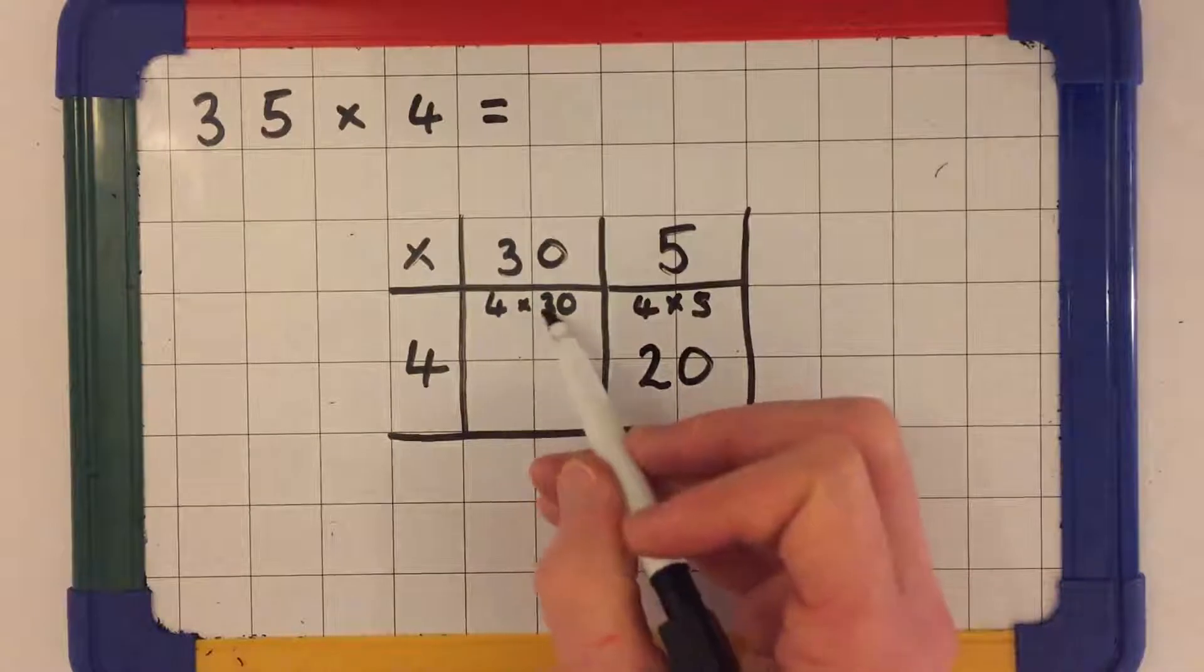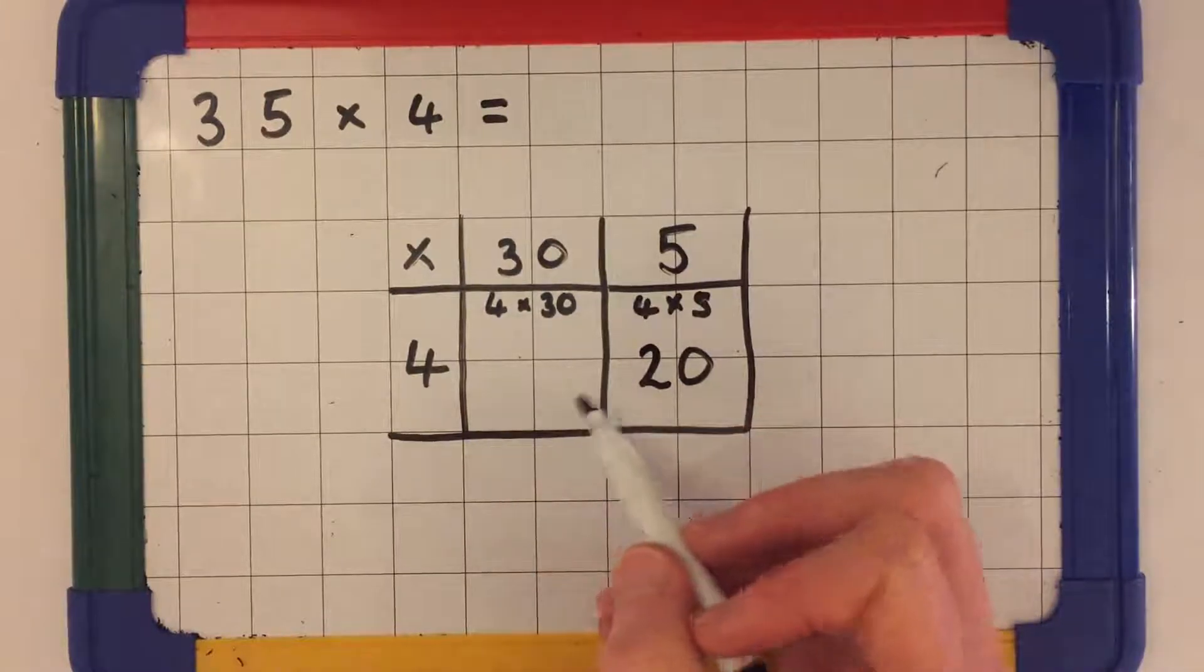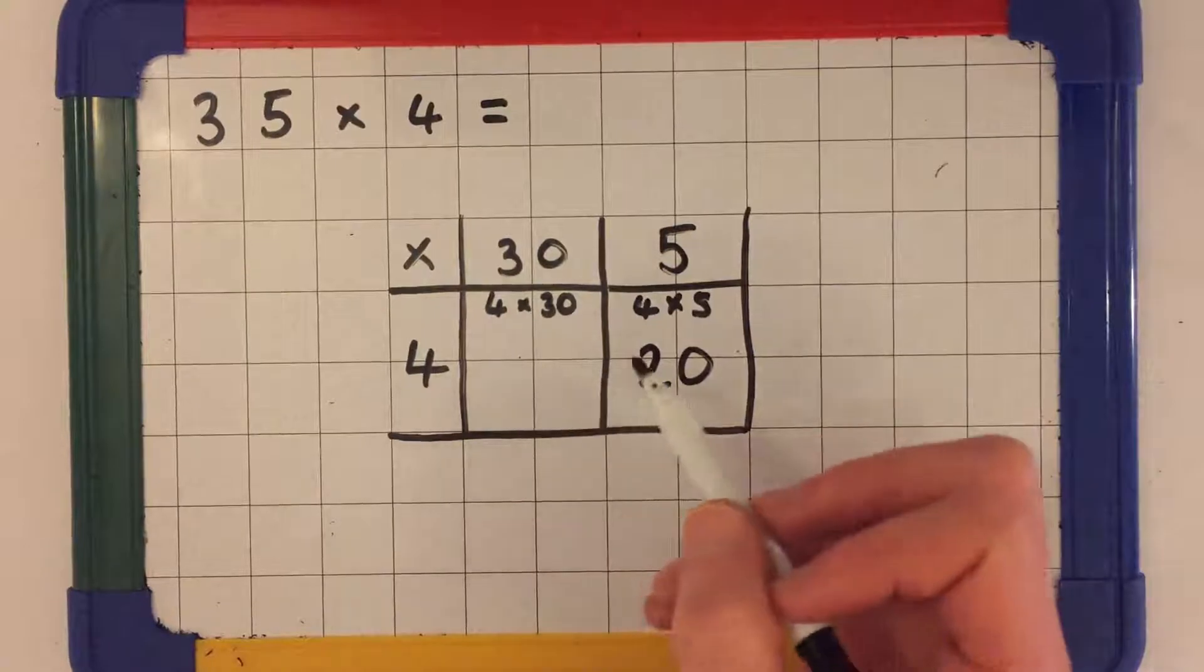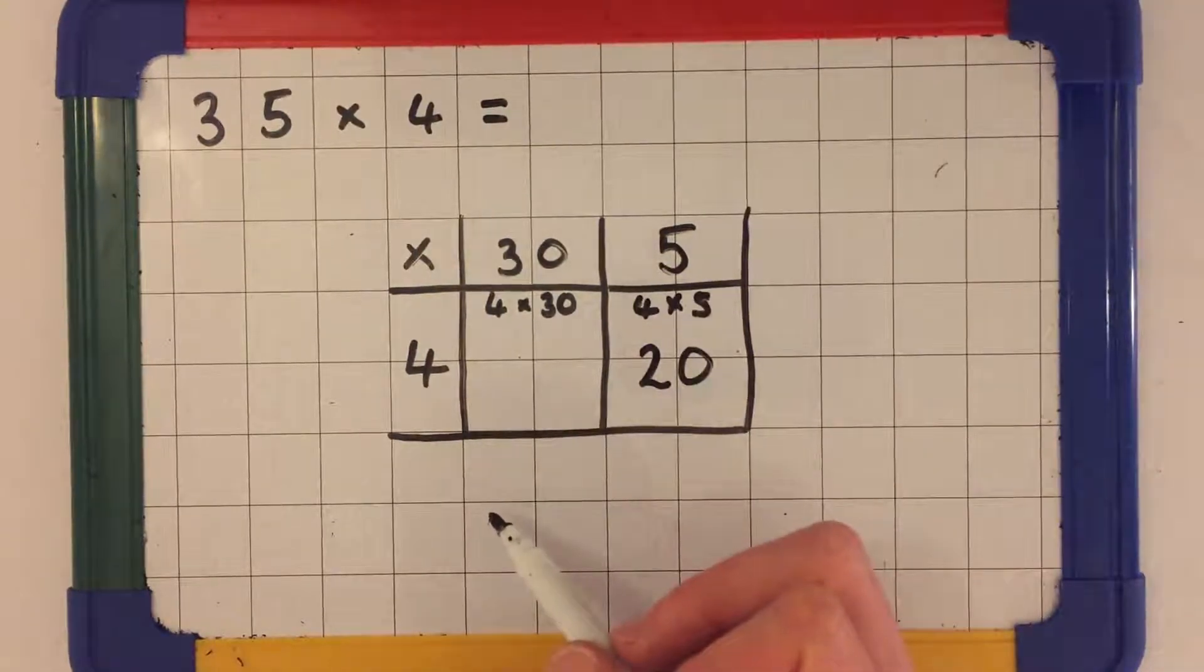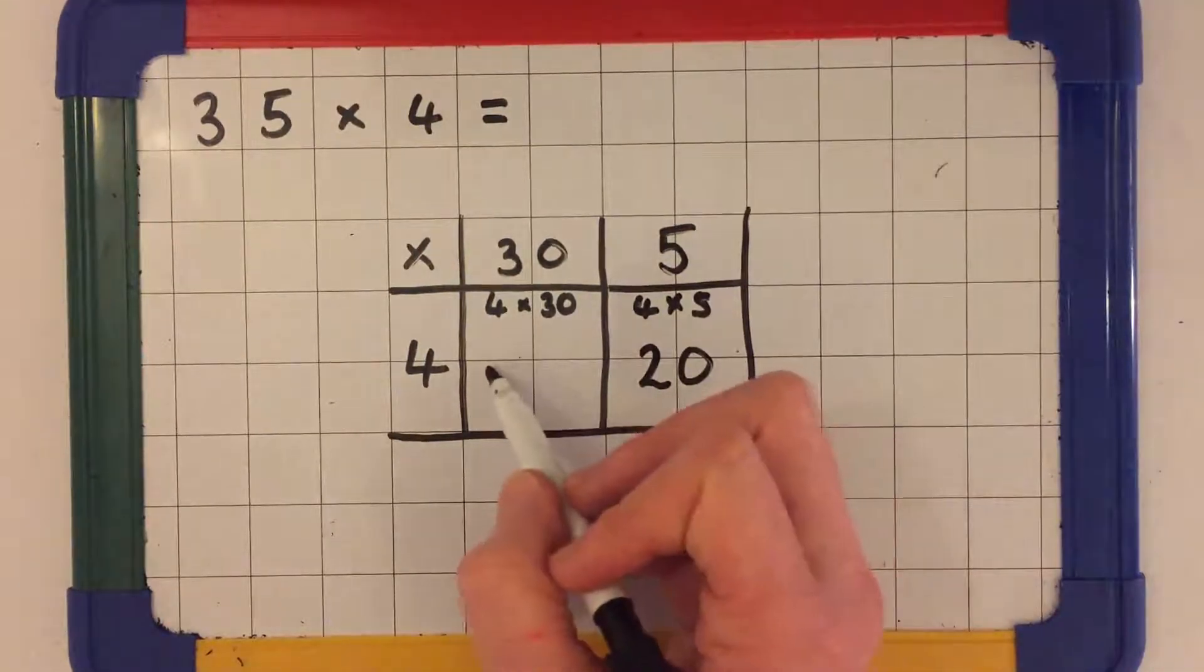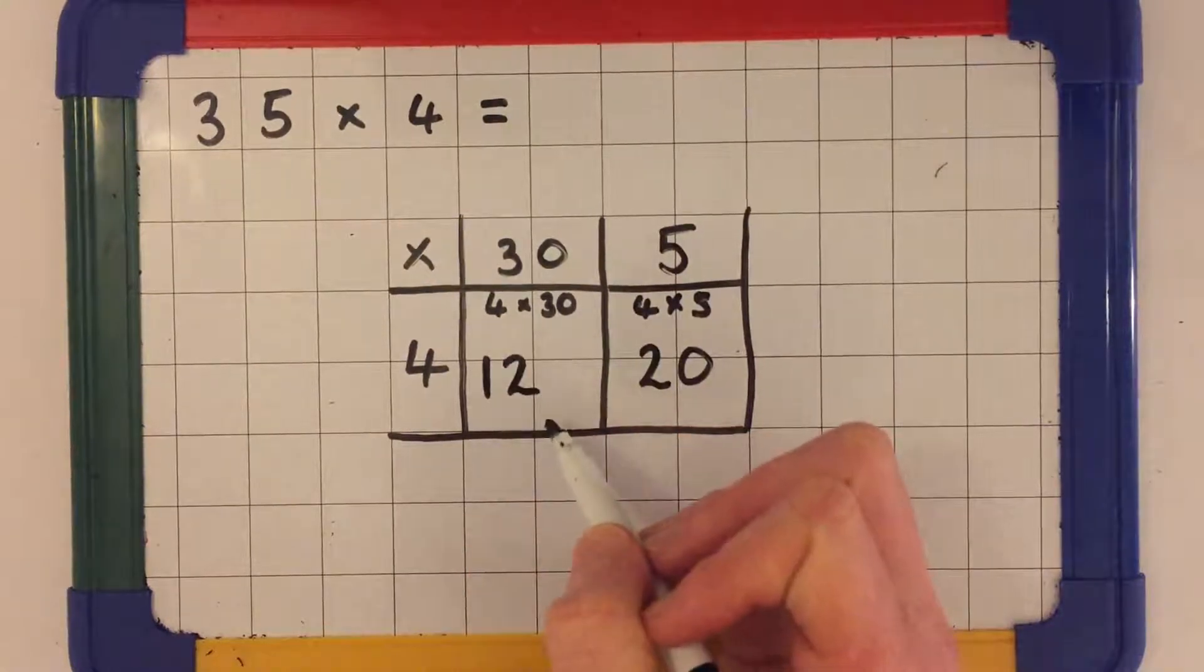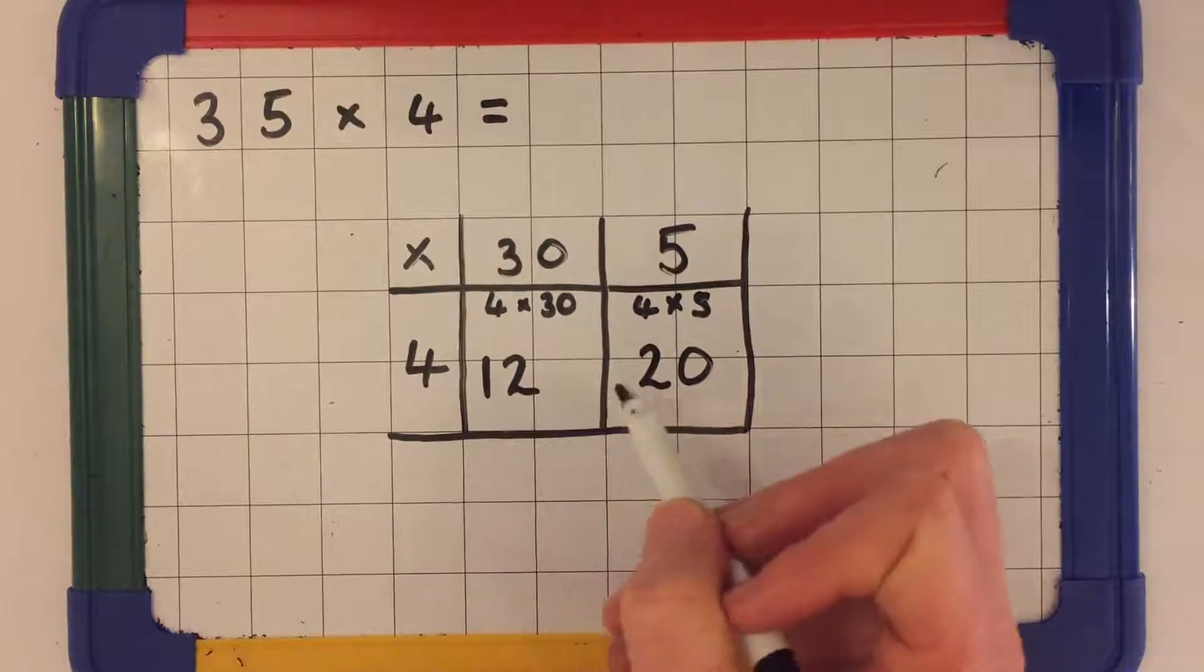Next I'm going to solve 4 times 30. To do this I'm going to solve 4 times 3 first and then multiply that answer by 10. 4 times 3 is 12. Multiplied by 10 makes 120.